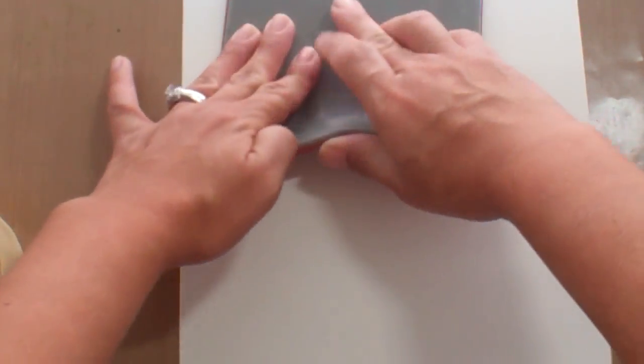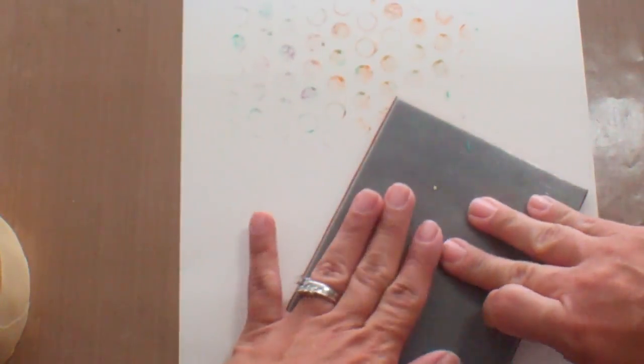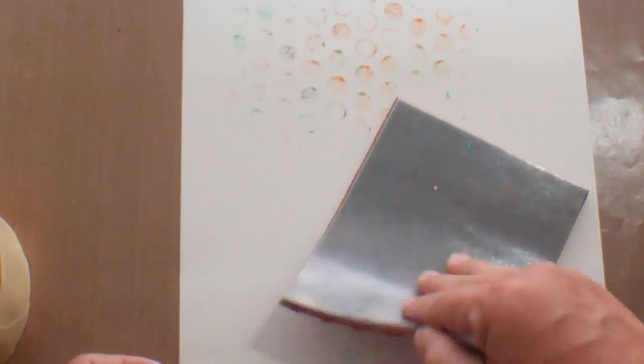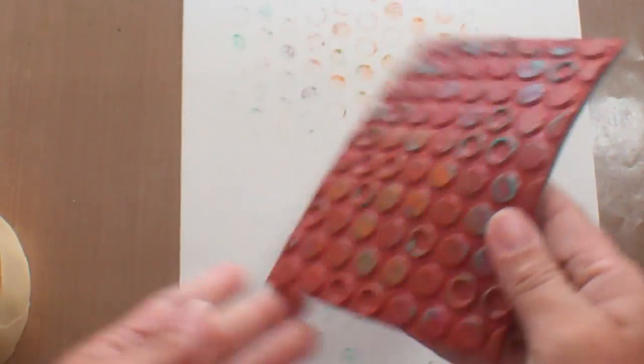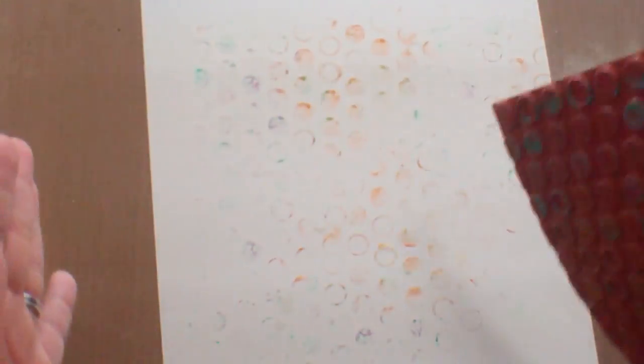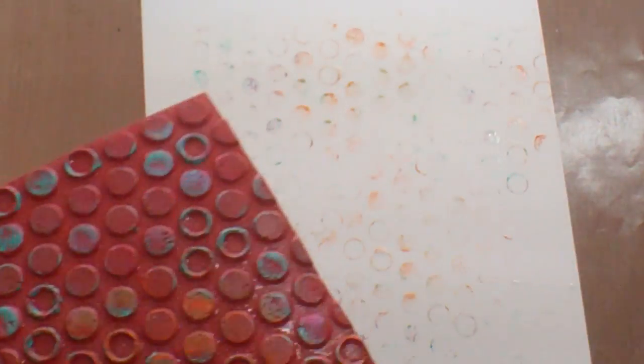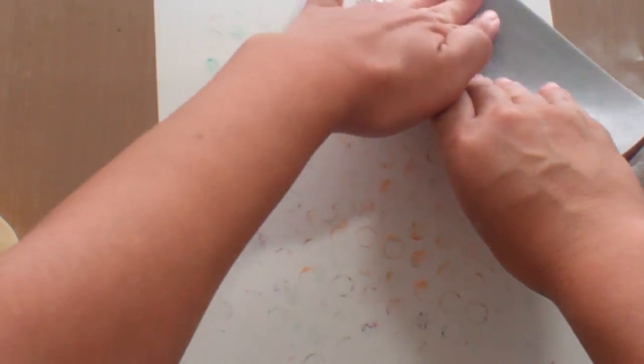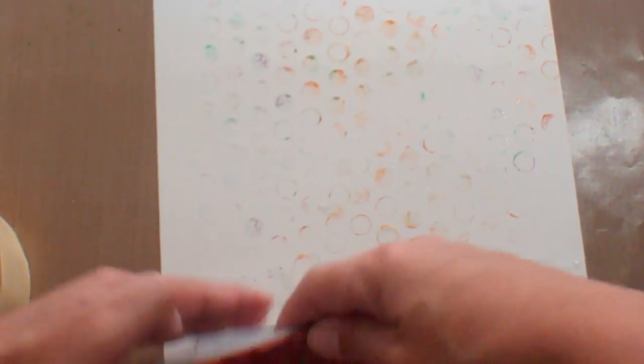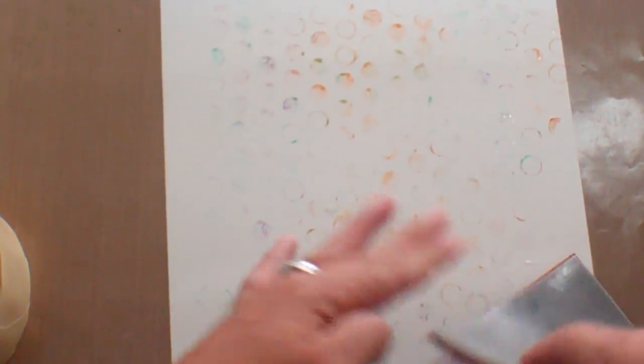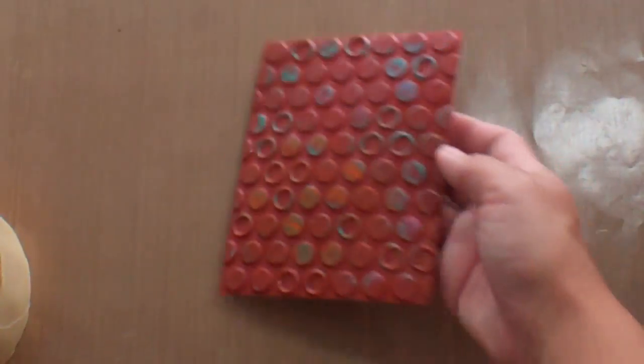And I could get some cardstock too and make maybe some background paper for a card. So I'm going to get a piece of Papertrey Ink paper I've been hoarding. This is the creamy color, whatever that's called. And I'm going to stamp. I just don't want to waste this awesome color that's on here. There's still some turquoise here. Okay, so we're not going to watch that right now. We are going to move on.